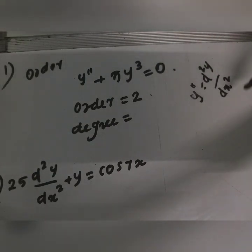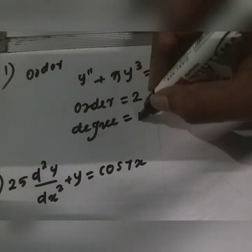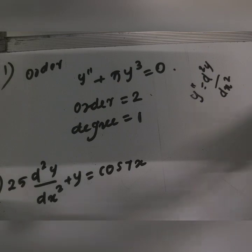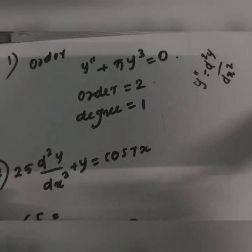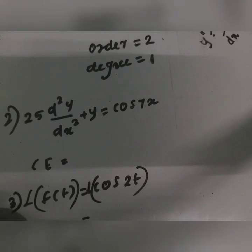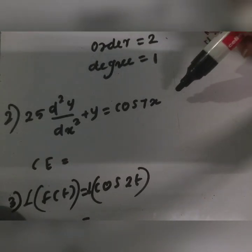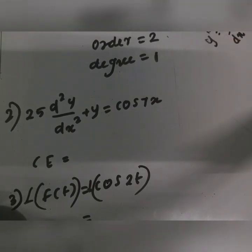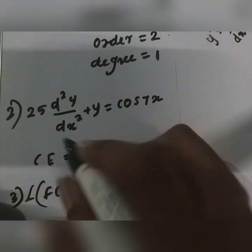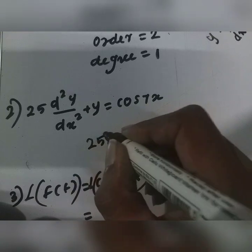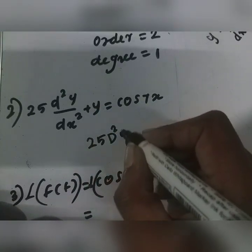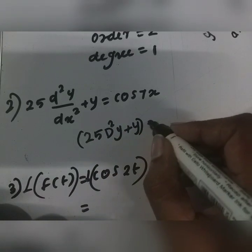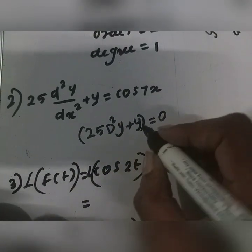The highest derivative gives us the order. The power of the highest derivative gives us the degree. Now, we have a non-homogeneous equation and a homogeneous equation. The equation here is 25D squared y plus y equal to 0.